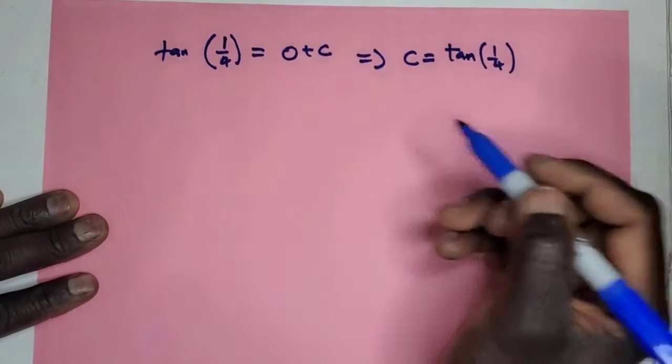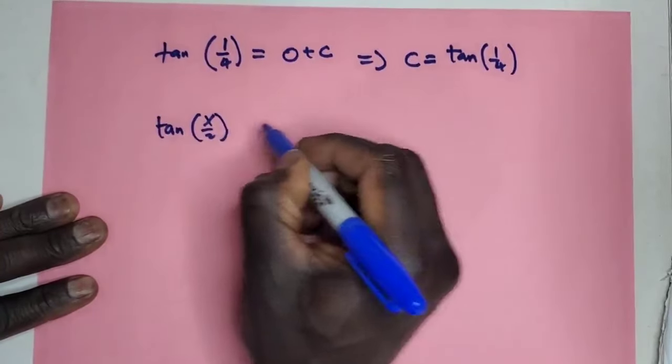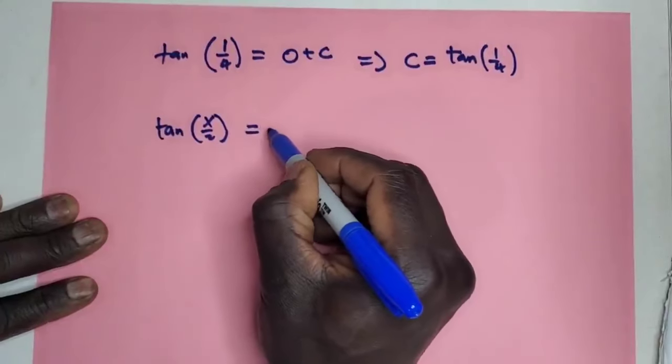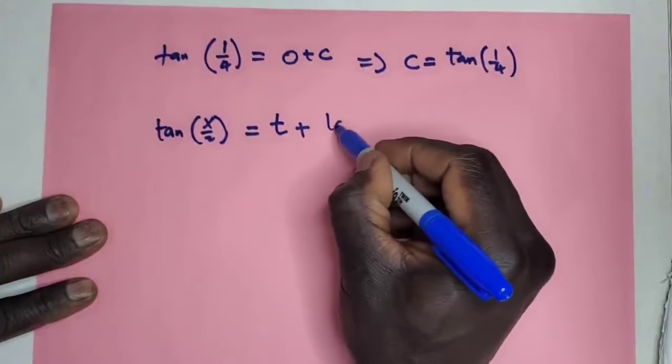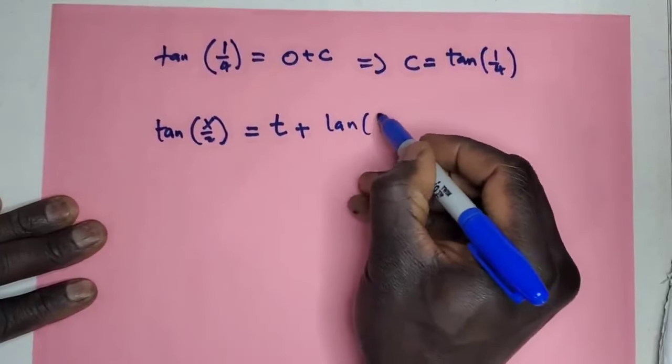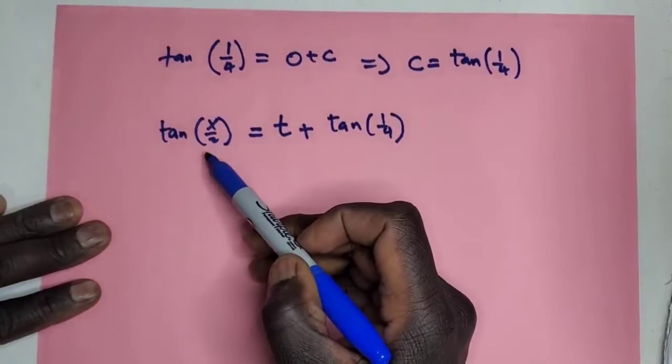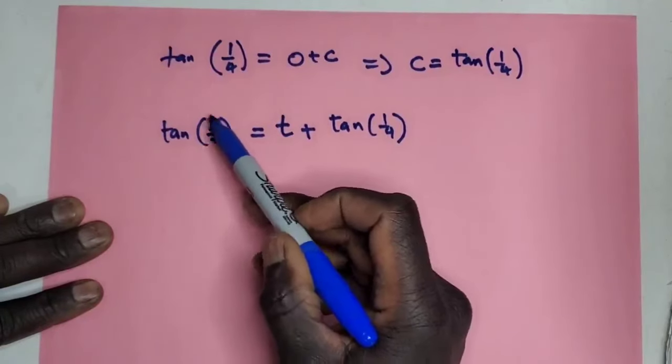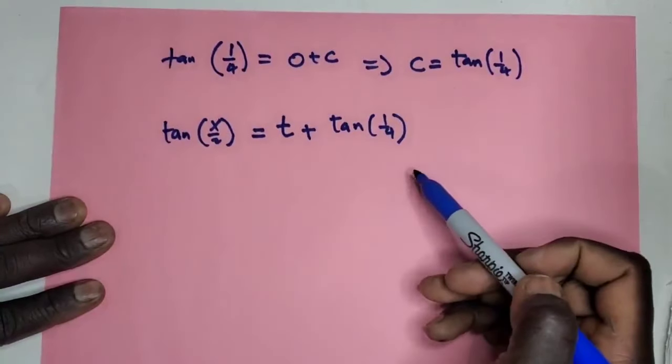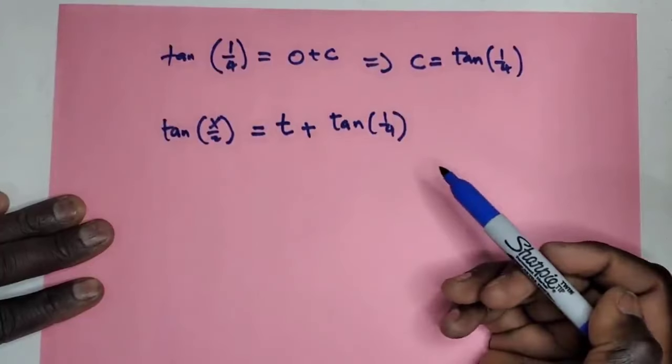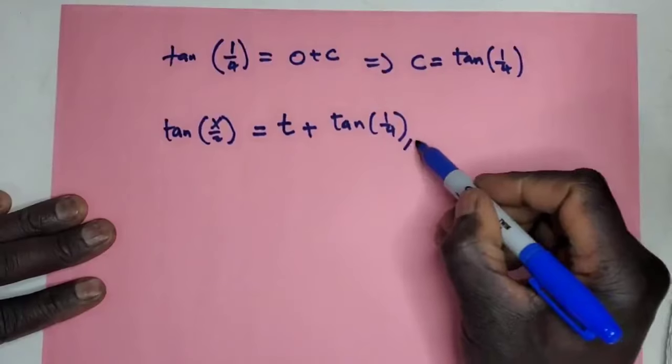Now you can put together, so that's going to be tan(x/2) = t + tan(1/4). You can get rid of all this and get x as a function of t, or you can leave it this way. For now I'm going to leave it this way, and I will do the integration of this one later. Thanks for your time.